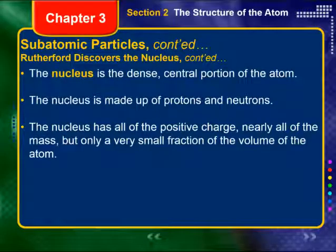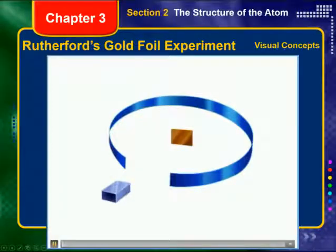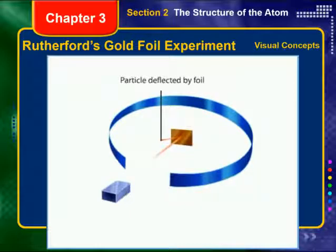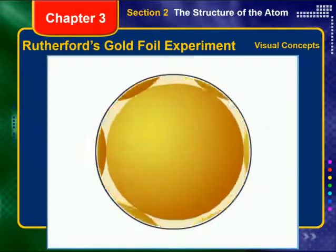Rutherford argued that the reason most alpha particles were undeflected was that most parts of the atom were actually empty space. The nucleus is a dense, central portion of an atom composed of protons and — as we now know — neutrons, though Rutherford didn't know that yet. The nucleus has all of the positive charge and nearly all the mass, but only a very small fraction of the volume of an atom. Ernest Rutherford, with Hans Geiger and Ernest Marsden, discovered the nucleus using a beam of positively charged alpha particles, bombarding a sheet of gold foil. Most particles passed straight through; about 1 in 8,000 were deflected, sometimes directly back at the source. Rutherford explained this by hypothesizing that nearly all of the mass of an atom is concentrated in a very small volume called the nucleus.